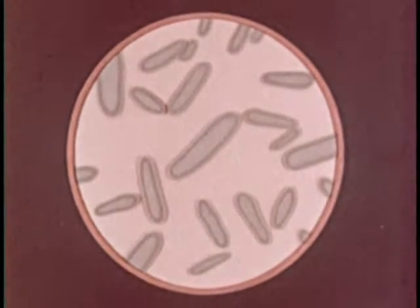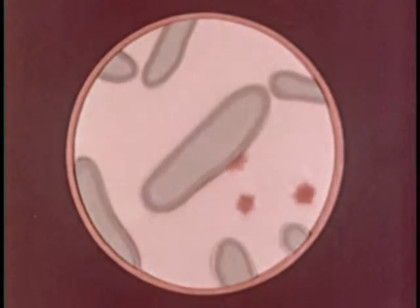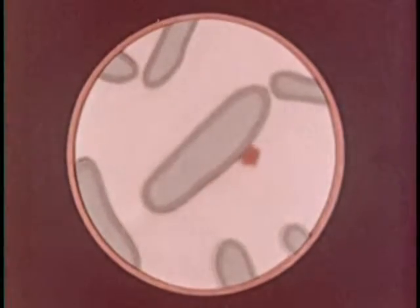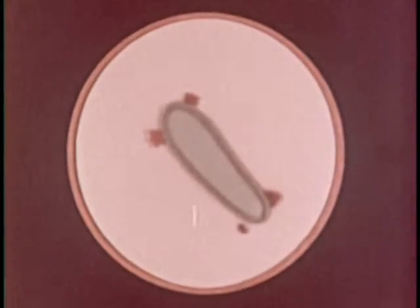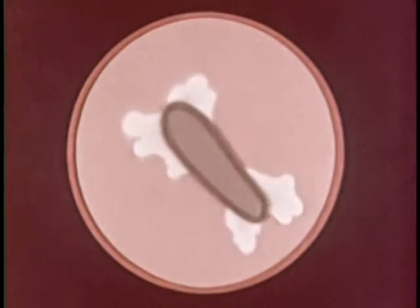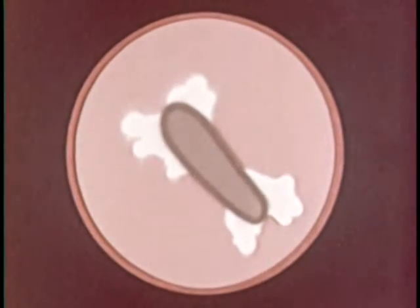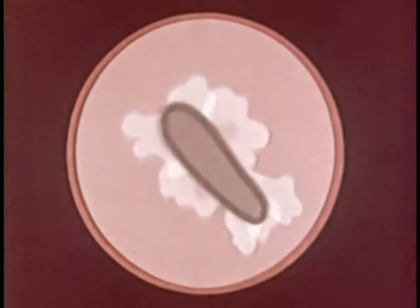Parasites, saprophytes, and autotrophs all take in food through their cell walls. To pass through these cell walls, the food must be soluble. In some instances, insoluble foods are converted into soluble materials by chemicals released by the bacteria themselves. All bacteria require soluble food to live.